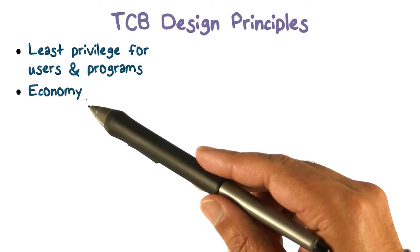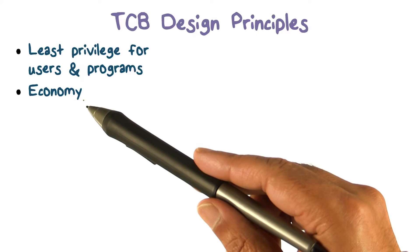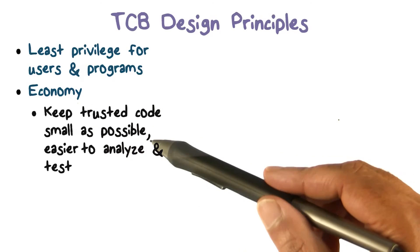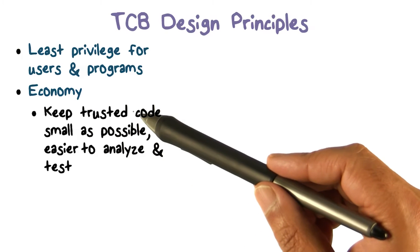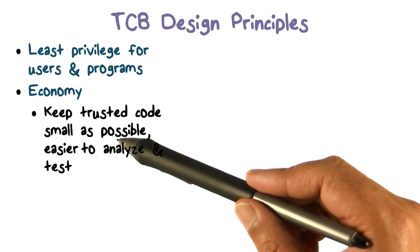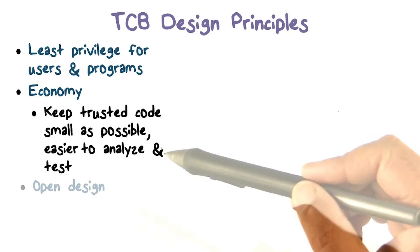Economy is the other thing. Economy means keep it simple, and it's really more important when it comes to trusted code. You want to keep it simple and as small as possible.